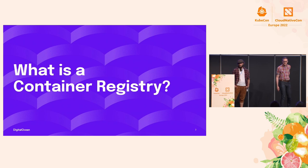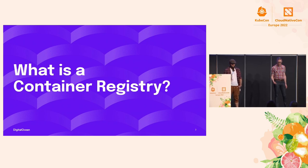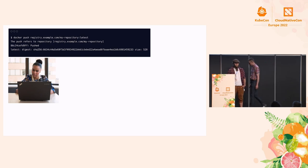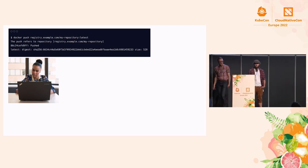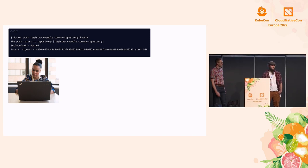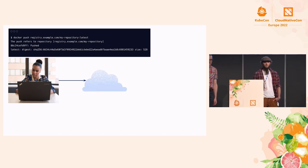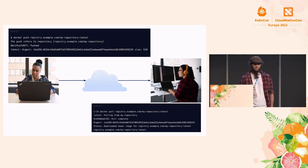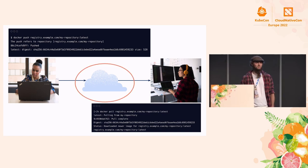Before we get into details, let's answer a really basic question: what is a container registry? To answer that, let's start with something most of us have probably done — a docker push. You docker push, some ASCII arrows fly across the screen, and your container image is now somewhere in the cloud. Later, your coworker or a deployment system can pull that image and run it somewhere else. The thing that stores those images in the cloud — that's a container registry.